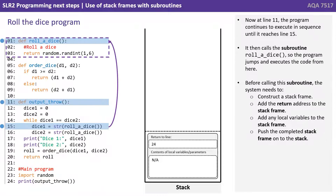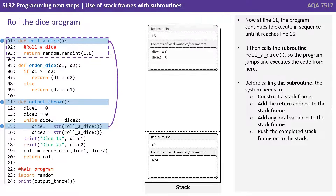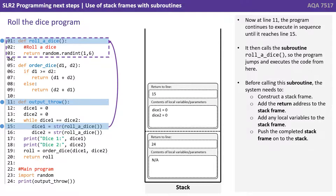Now at line 11, the program continues to execute in sequence until it reaches line 15, where it calls the subroutine Roll a Dice. The program jumps and executes the code from there. But again, before calling the subroutine, the system needs to construct a stack frame, add the return address to it, add any local variables to it, and push the completed stack frame onto the stack.